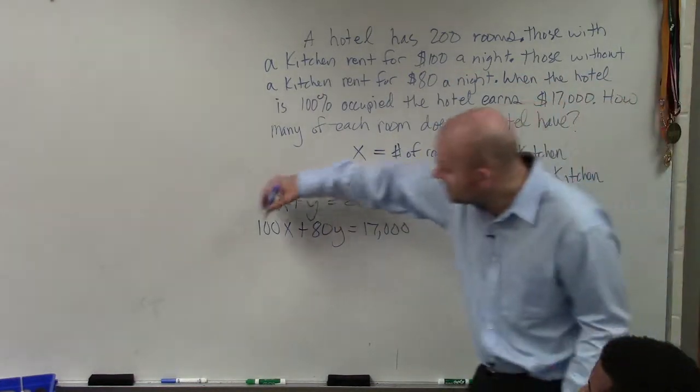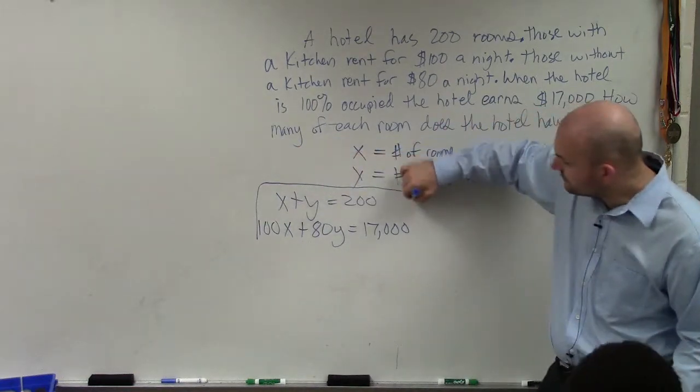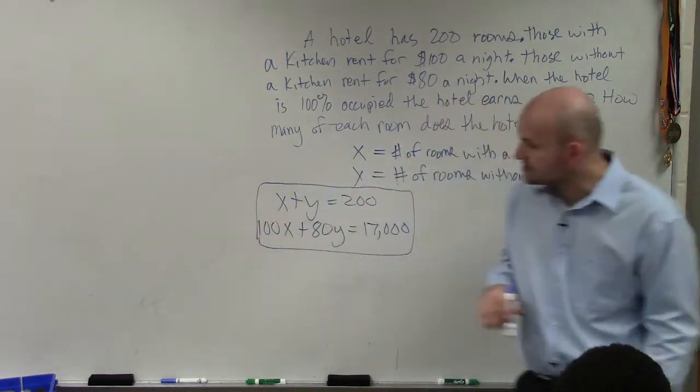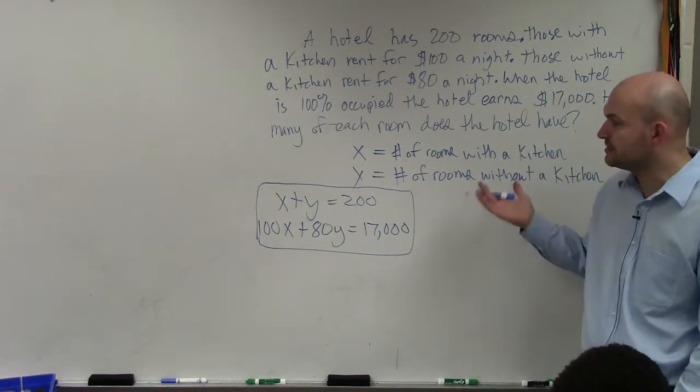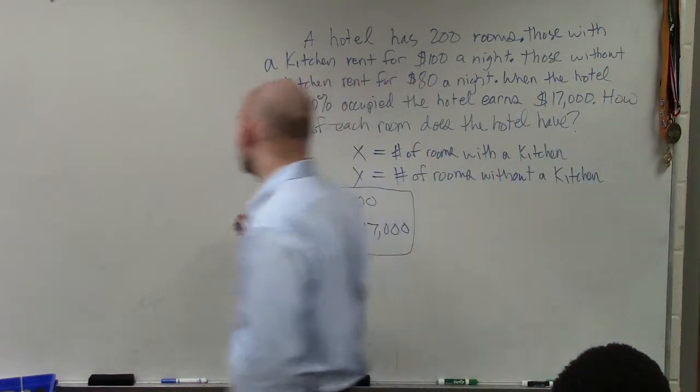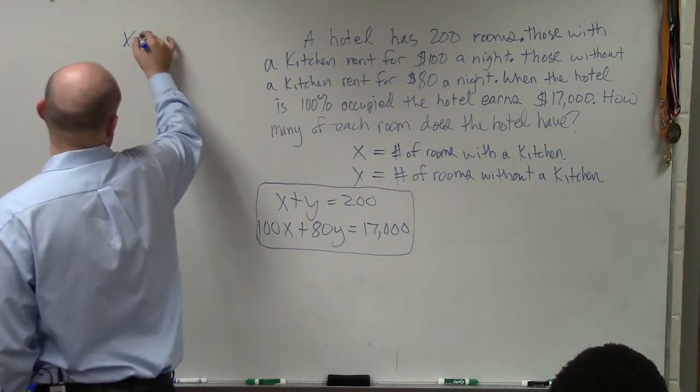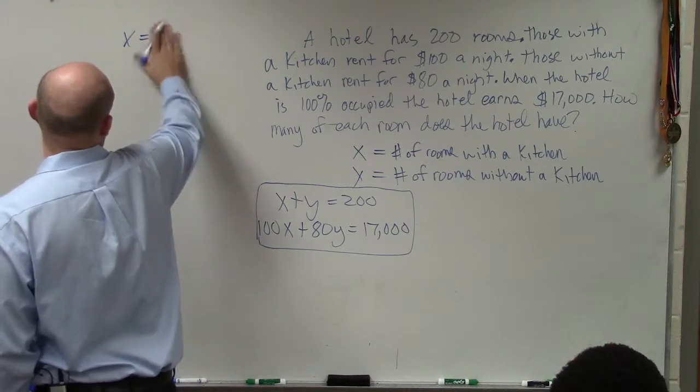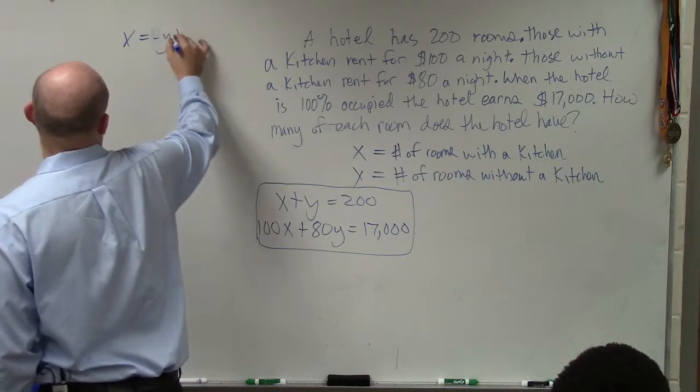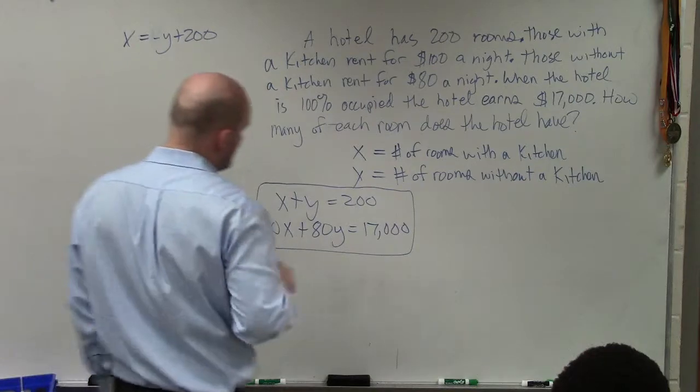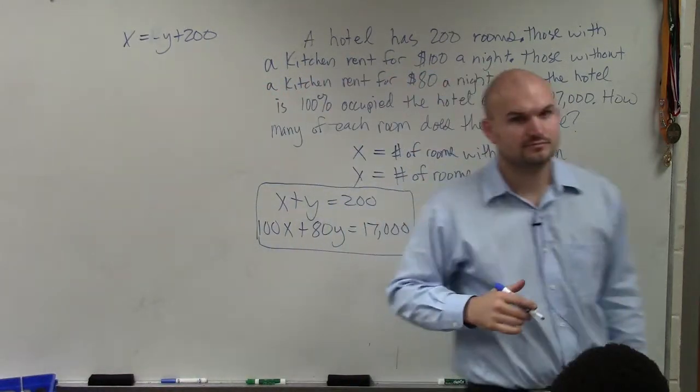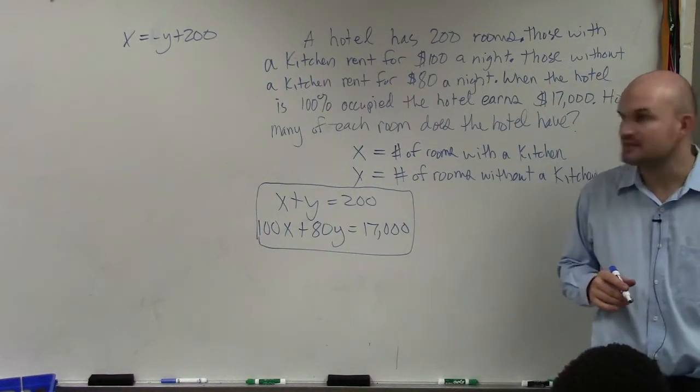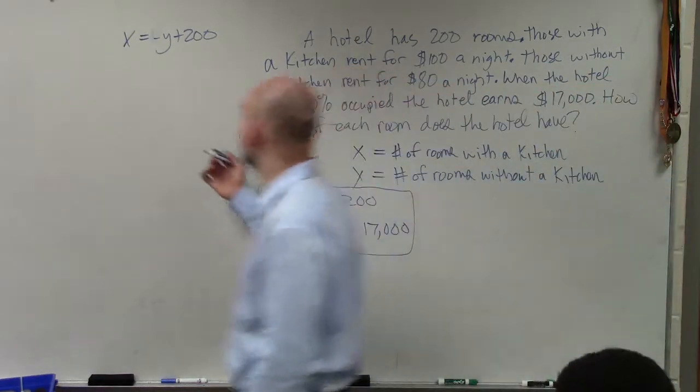So now, ladies and gentlemen, we have created a system of equations that is just like what we have done before. So we just need to pick a variable to solve for. I'm going to pick x. So I'll say x is equal to negative y plus 200. Does everybody follow me on what I did up top?